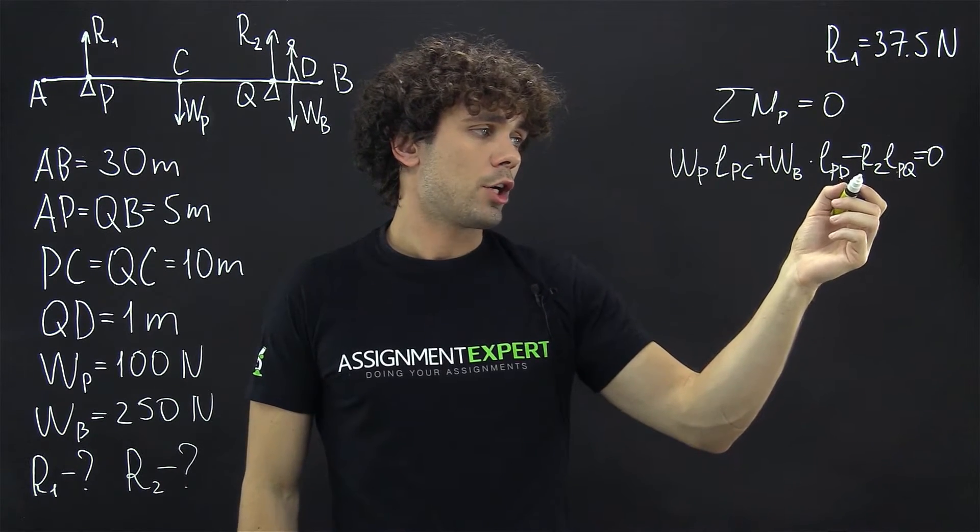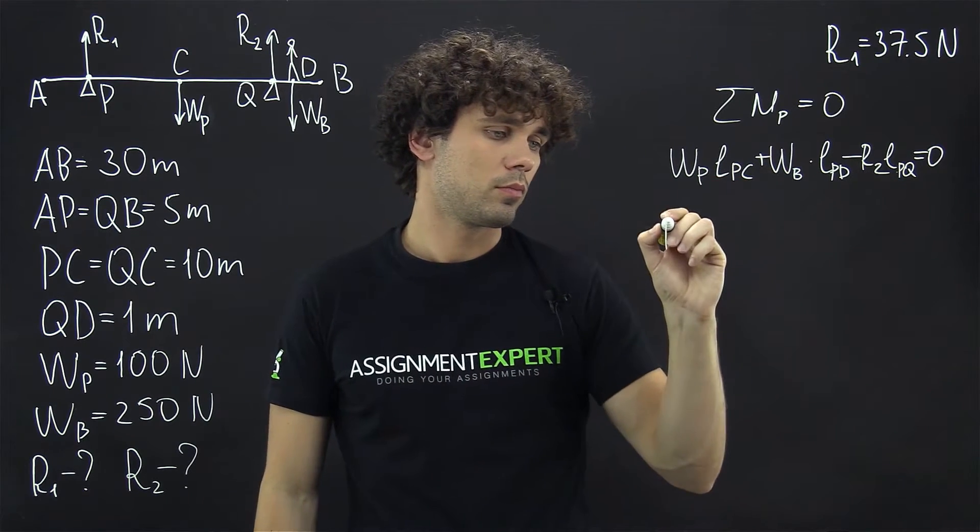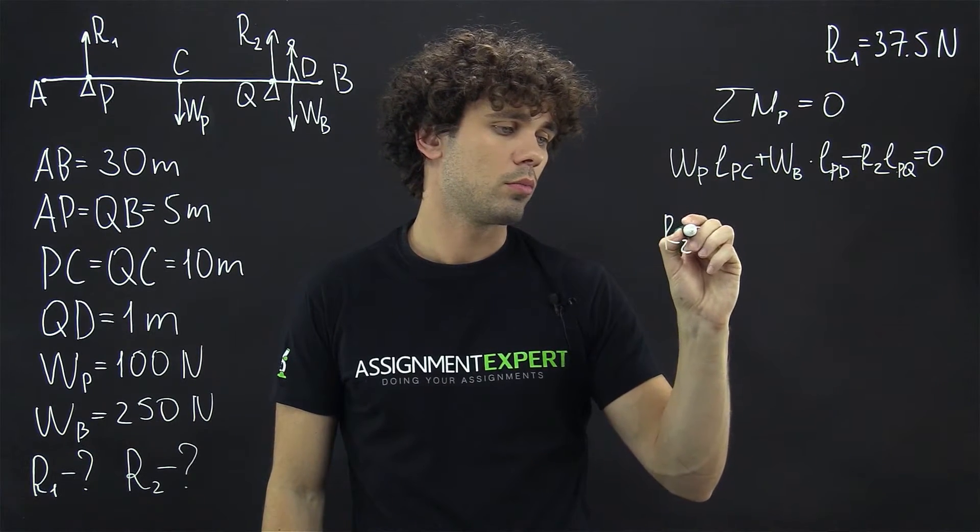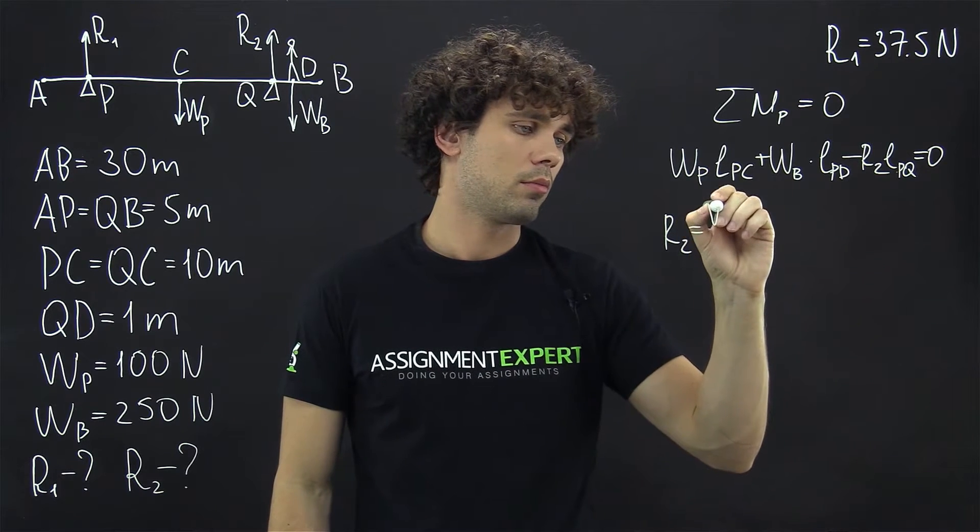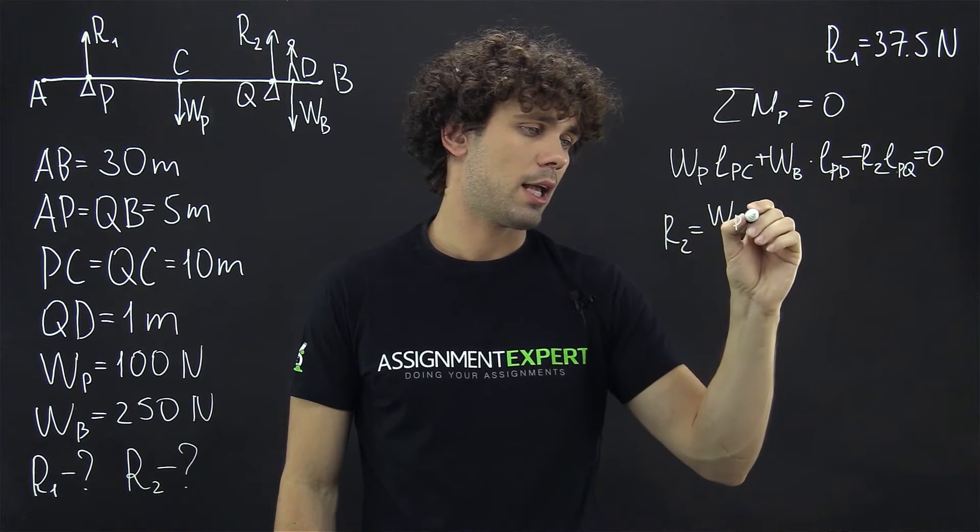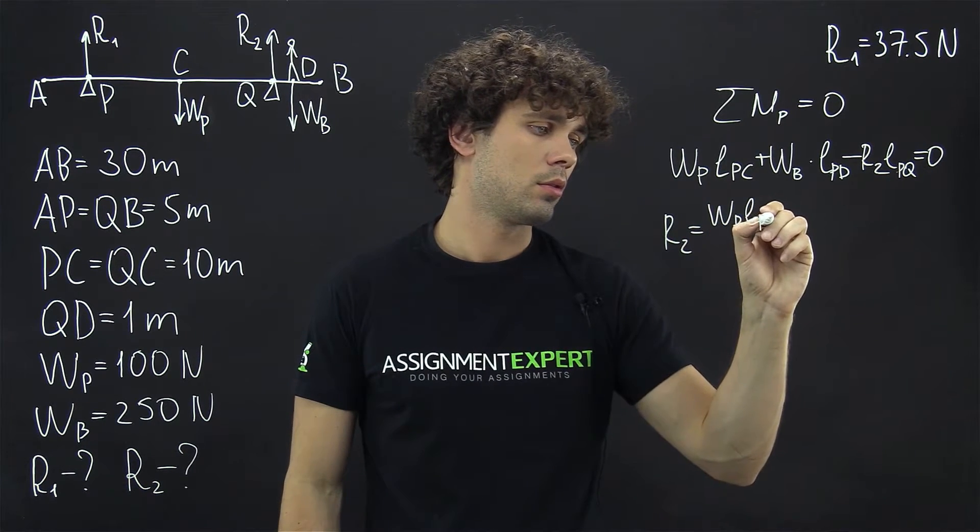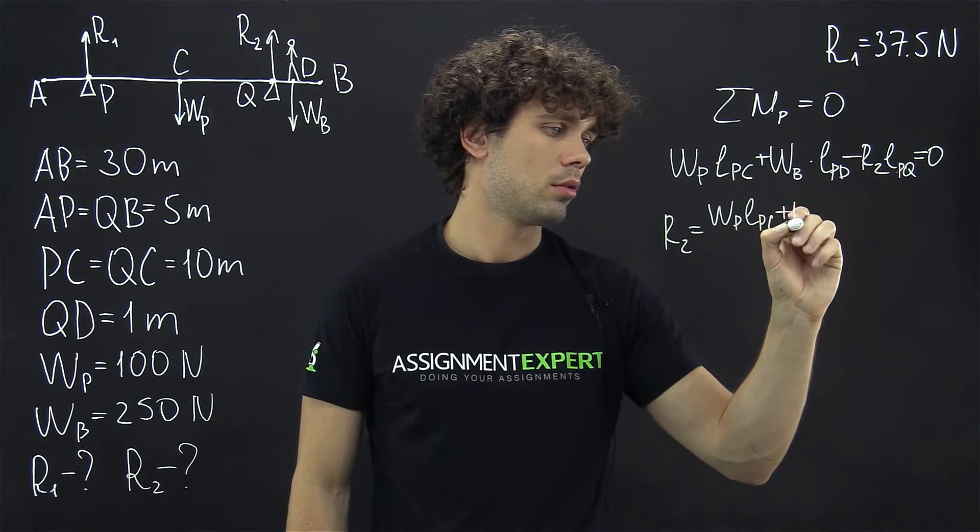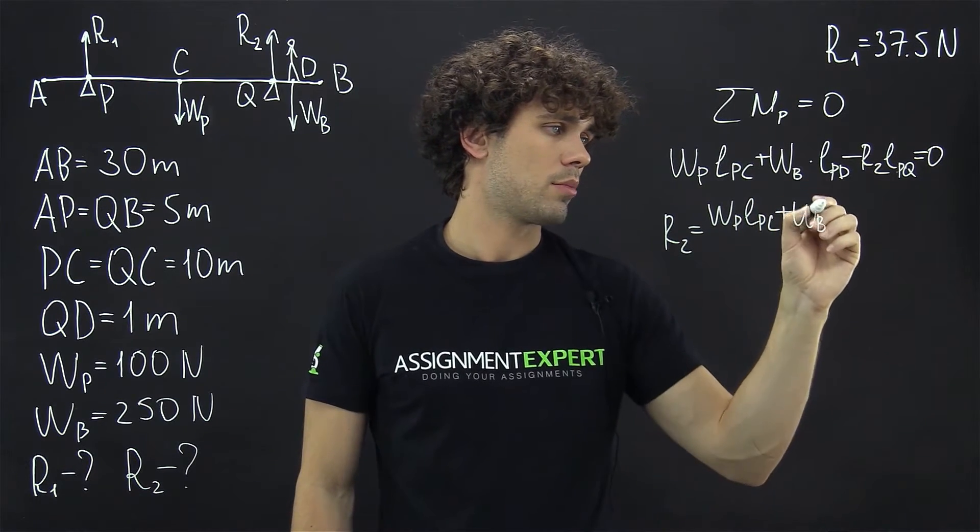Now let's derive R2 from this equation. R2 equals WP times LPC plus WB times LPD, all divided by LPQ.